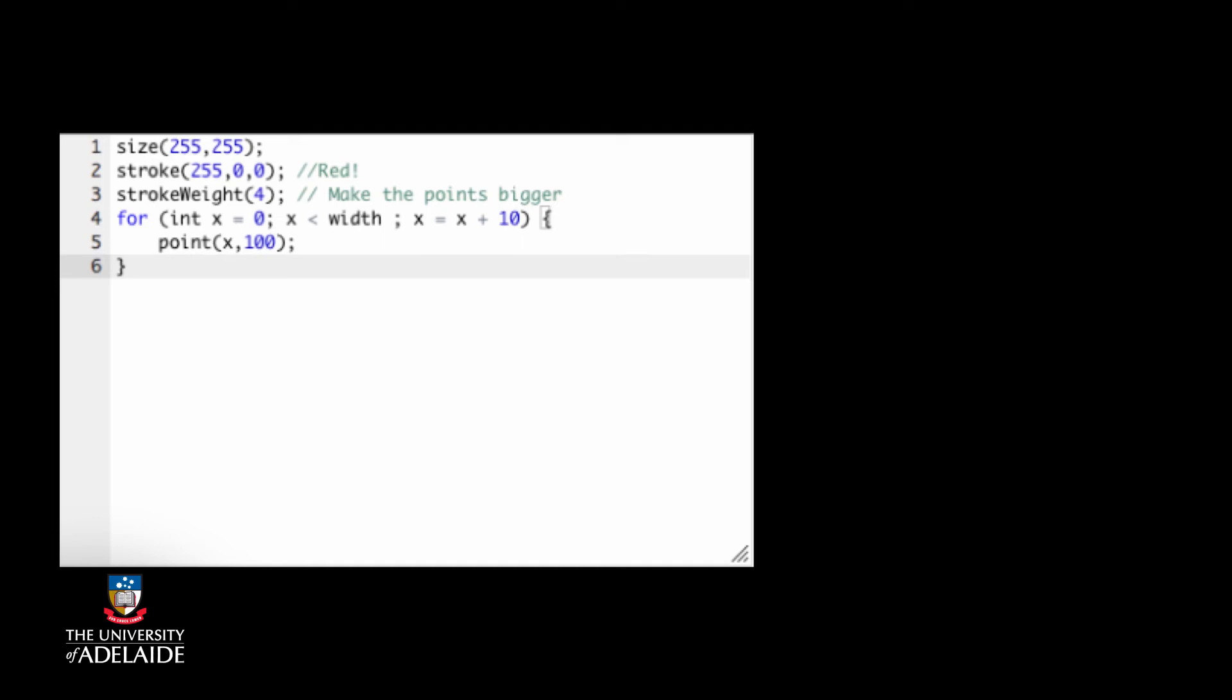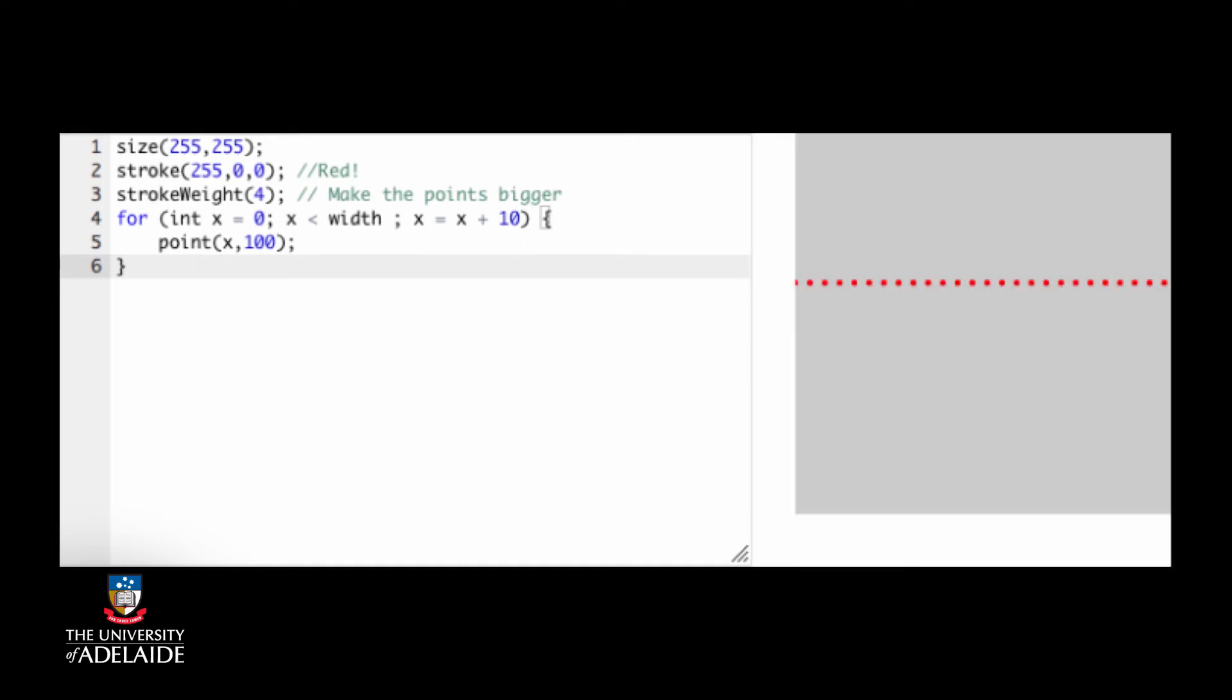In this example, we're drawing red dots across the screen. But what if we wanted to draw this line of dots more than once? Well that's right, we can use nested for loops.